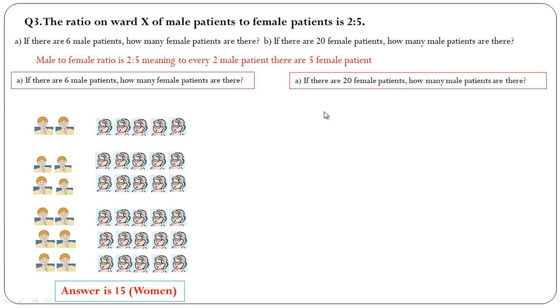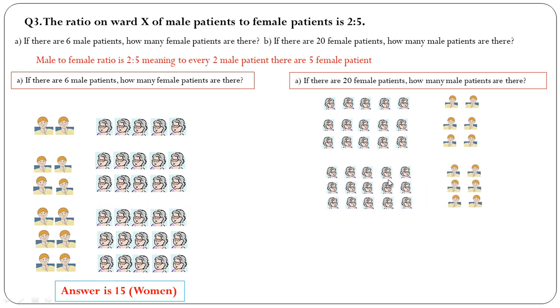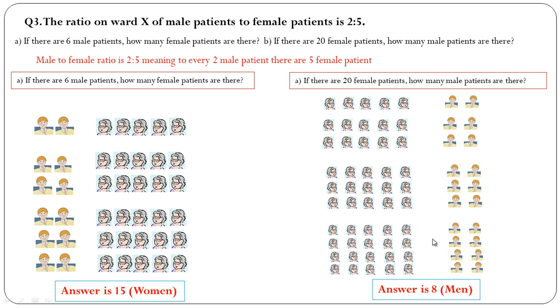Now see the next part: if there are 20 female patients, how many male patients are there? We know for every 5 female patients there are 2 male patients, so for 10 it will be 4, for 15 there will be 6 male patients, and for 20 there will be 8 male patients. The answer is 8 men.